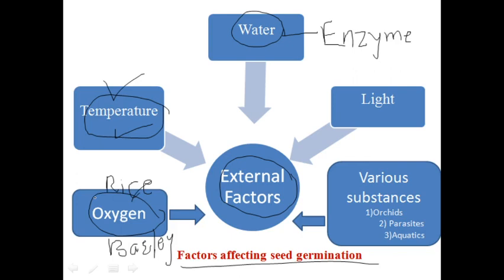Typha latifolia is one example — it germinates rapidly when oxygen pressure is lower. These are some examples of how the absence or presence of oxygen can affect germination.